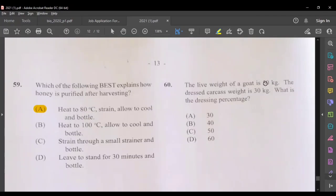The live weight of a goat is 50 kg. The dressed carcass weight is 30 kg. What is the dressing percentage? So how do you work out the dressing percentage? You put the dressed weight at the top, that's 30, divided by the live weight, which is 50, and then you multiply that by 100, and the answer that you get should be 60%.